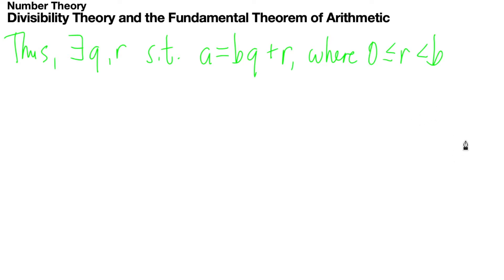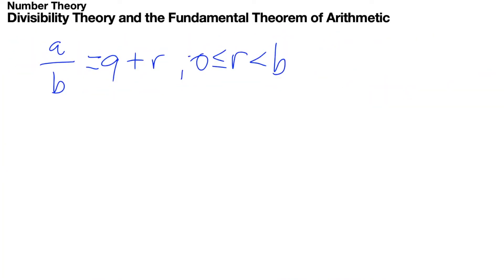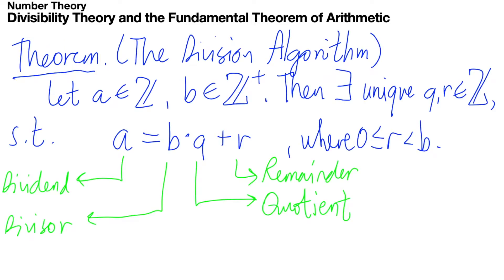We're going to continue our proof for the division algorithm. So far, we have talked about the division algorithm itself: let A be in the integers, B be a strictly positive integer. Then there exist unique Q and R in the integers such that A equals B times Q plus R, where the remainder R satisfies 0 ≤ R < B.